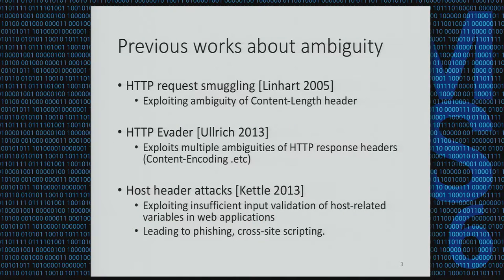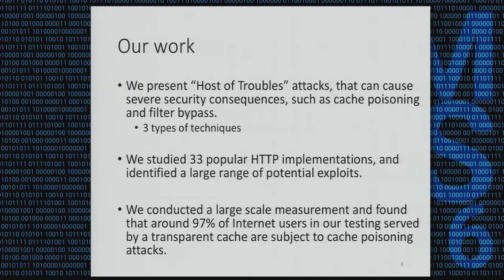Many attacks exploiting ambiguity have been found in HTTP implementations. In 2005, Linhart found the HTTP request smuggling attack, which exploits ambiguity in the Content-Length header. In 2013, HTTP Evader exploits multiple ambiguities of HTTP response headers. In the same year, James Kettle used host ambiguities to exploit insufficient validation of web applications, leading to phishing and cross-site scripting. In our work, we present a new class of attacks with severe security consequences — we studied 33 popular implementations and found a number of potential exploits.